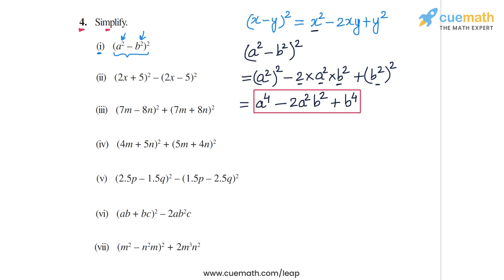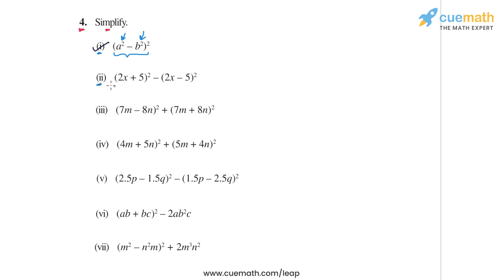This completes part 1. Now in part 2, we have the expression (2x+5)² - (2x-5)². This can be simplified in a very interesting manner — instead of expanding the two parts separately, we note that the whole expression is of the form a² - b², where a is (2x+5) and b is (2x-5).